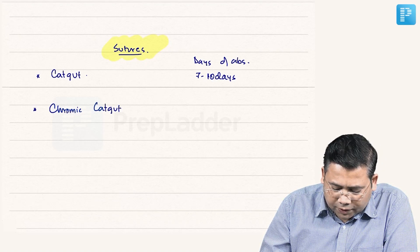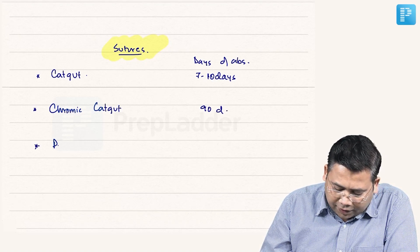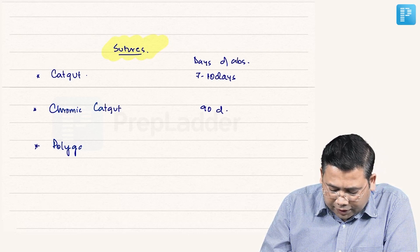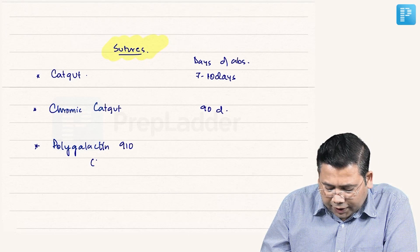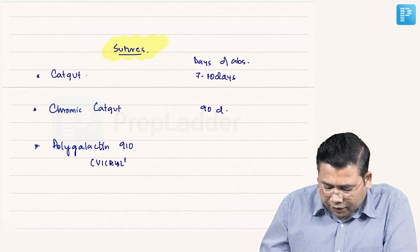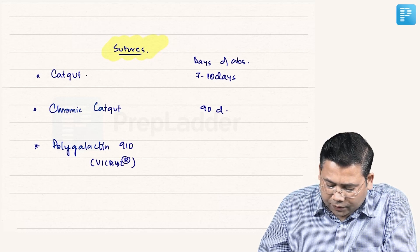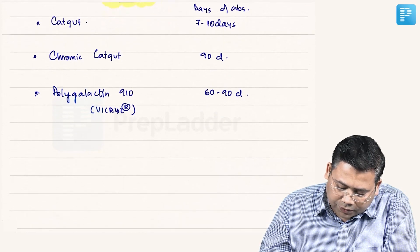Then we have polygalactin 910. When we talk about polygalactin 910, which is also marketed by the name of Vicryl, this is the brand name. Here, we have 60 to 90 days as a time of absorption.